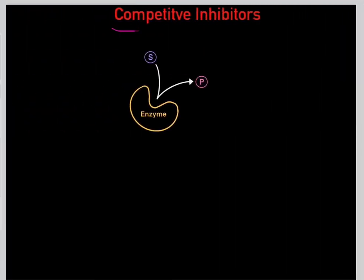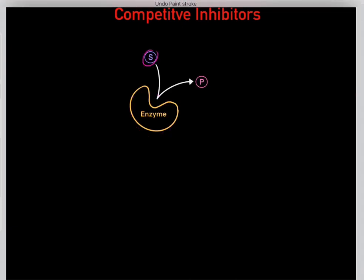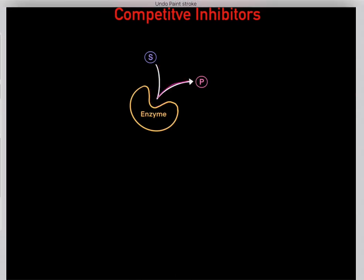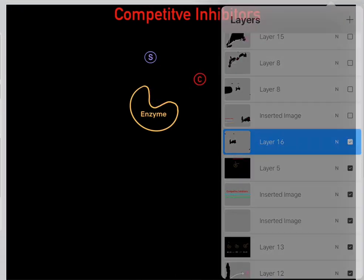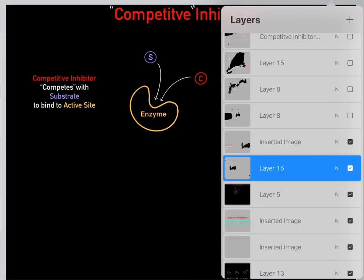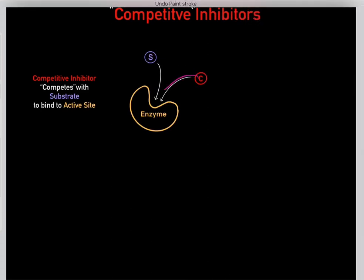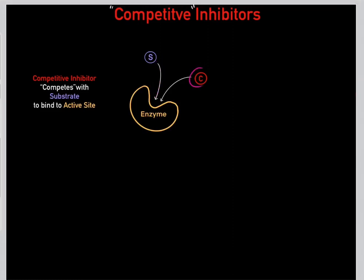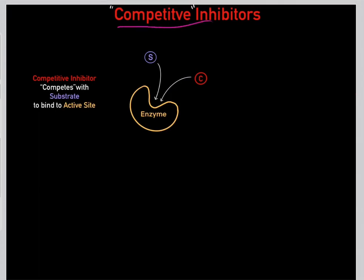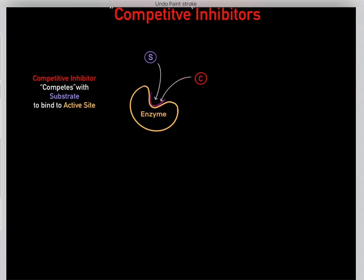First, I want to talk about competitive inhibitors. We know the way enzymes work — the substrate binds to the enzyme's active site, then we form the product, and the product falls off. What happens with a competitive inhibitor is it competes with the substrate for binding to the active site. It's called a competitive inhibitor because it's competing with the substrate for binding to the enzyme's active site.